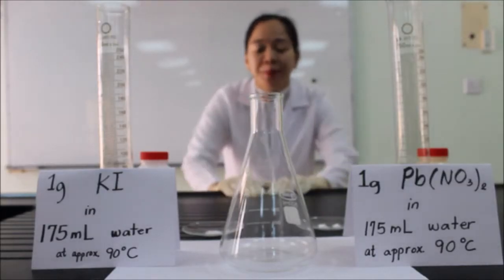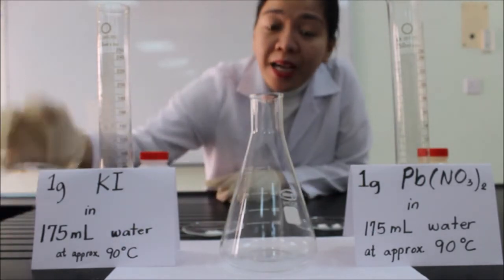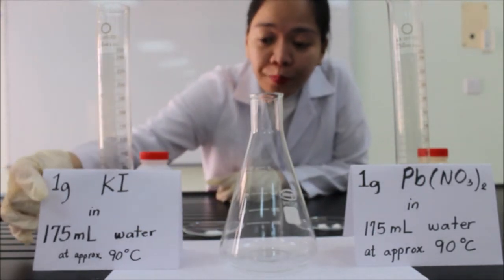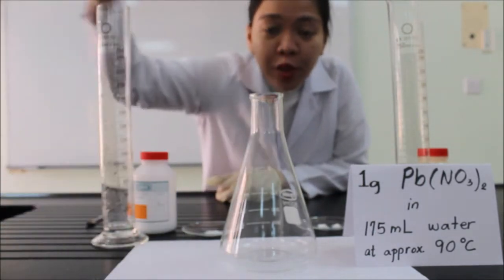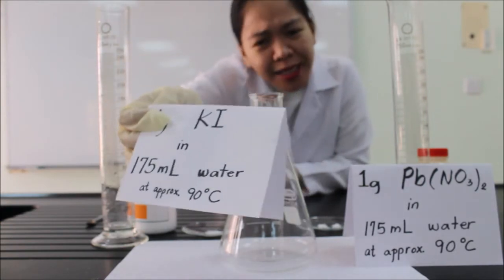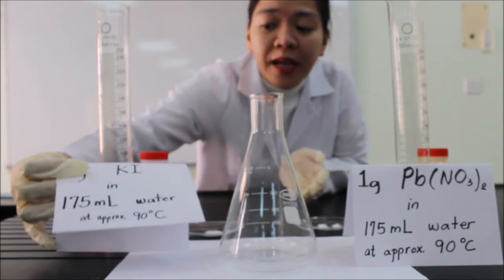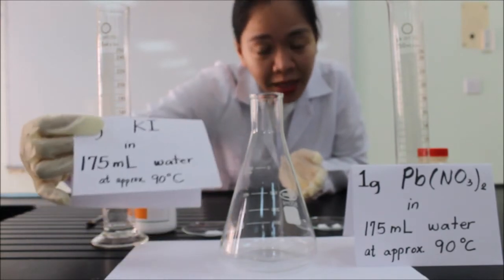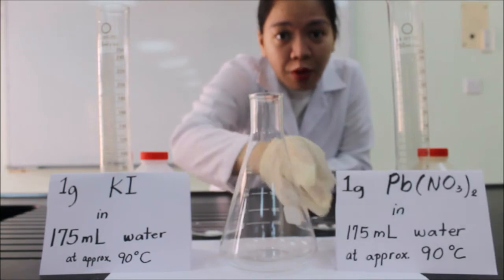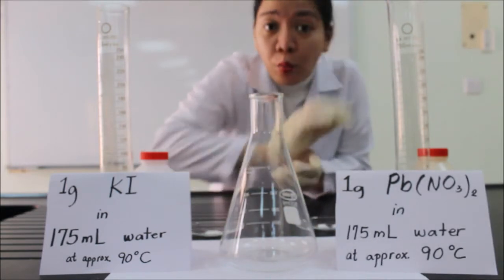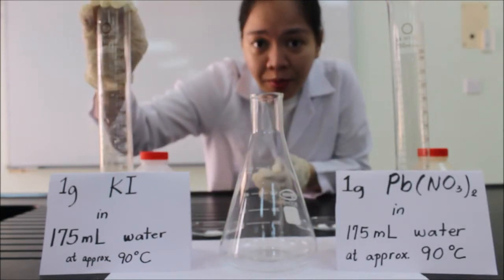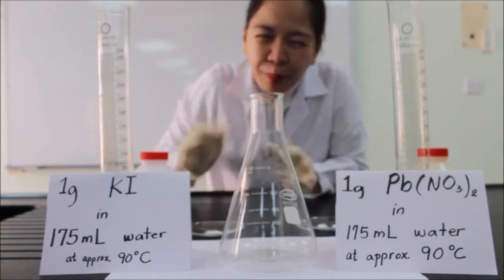Now we will repeat the experiment using hot water. So instead of room temperature, we will use boiling water, 90 degrees to 100 degrees Celsius. So 1 gram of potassium iodide and 1 gram of lead nitrate in 175 ml water at 100 degrees Celsius approximately.